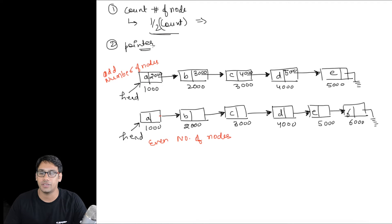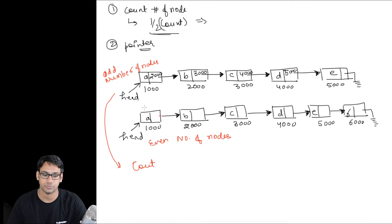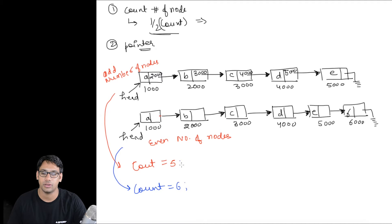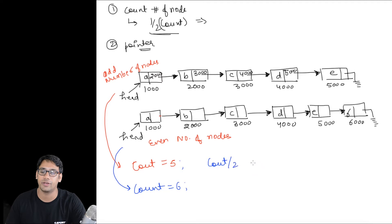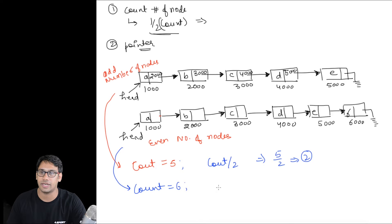If we write a count node function, it will return a count of five in the first case and a count of six in the second case. When we return count as five and do count divided by two, that gives us five divided by two, which is two. In the second case, count divided by two gives six divided by two, which equals three.